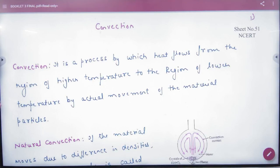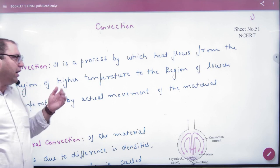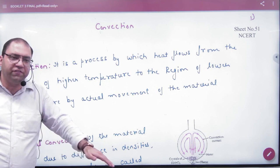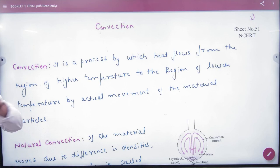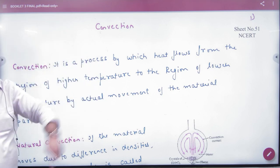Convection is a process in which heat flows from a region of higher temperature to a region of lower temperature. Heat always goes from higher to lower temperature by actual movement of material particles - atoms and molecules move themselves.